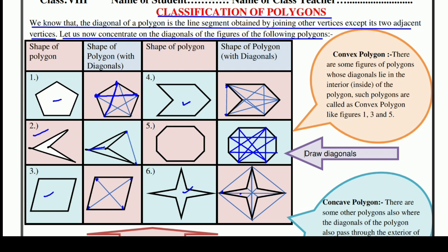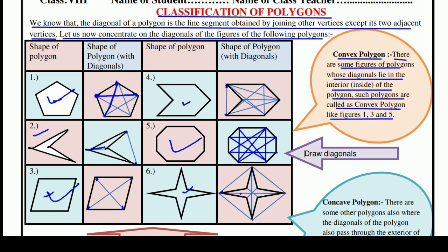There are two types of polygons on the basis of diagonals. First is convex polygon. There are some figures of polygons whose diagonals lie in the interior — that means inside of the polygon. Such polygons are called convex polygons, like figures 1, 3, and 5.